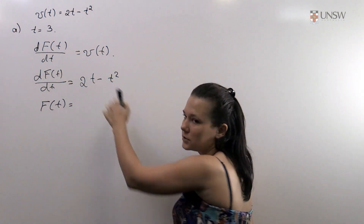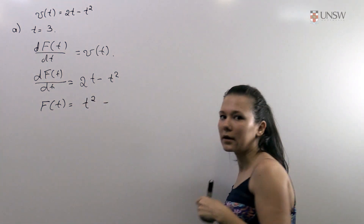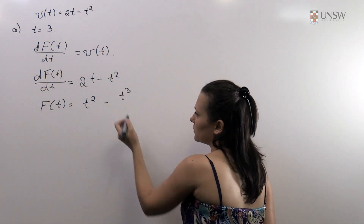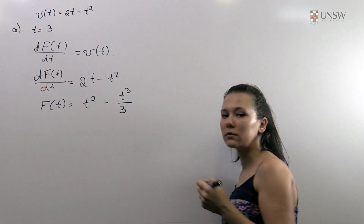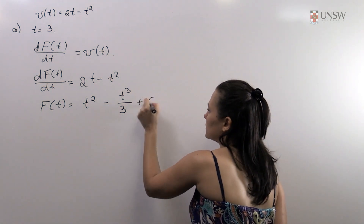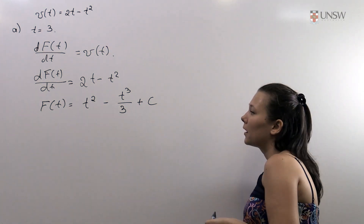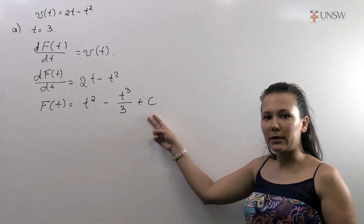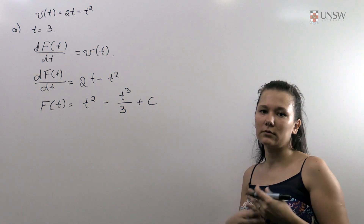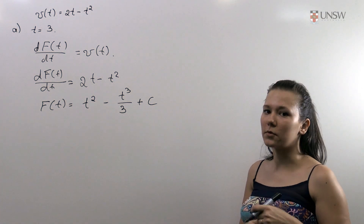The antiderivative of 2t is just t squared, minus the antiderivative of t squared which is t to the power of 3 over 3. We don't forget about the constant, because when we differentiate a constant it is just zero. This is not the complete equation of displacement because we haven't accounted for the displacement of our particle at moment zero.